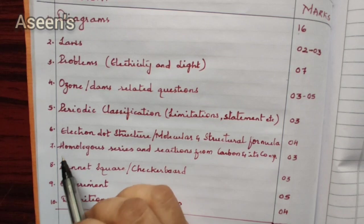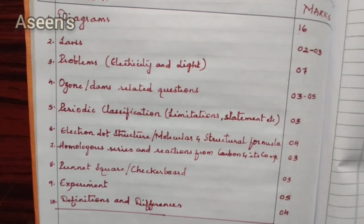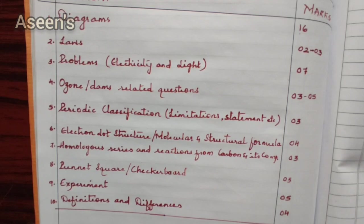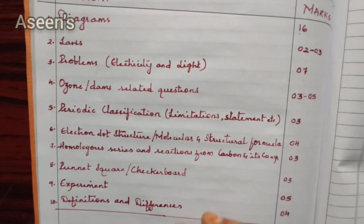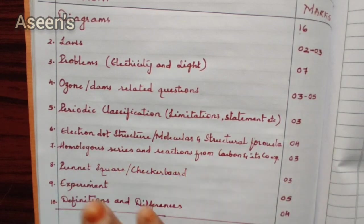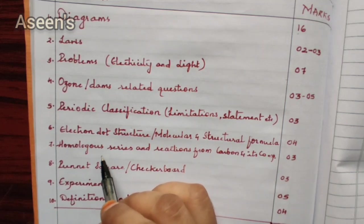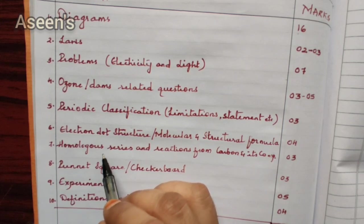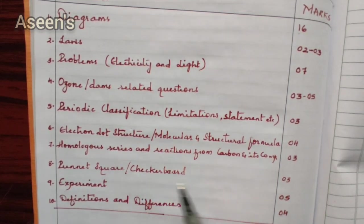Next, from the chapter carbon and its compounds, questions are related to homologous series and reactions. This is very important. You have addition reactions and substitution reactions, and direct questions have been asked from these. A total of three marks will definitely be allotted from reactions and homologous series. These are application-based questions — they will ask you to explain why something is a homologous series, requiring reasons and the general formula. You need to be thorough with the concept.